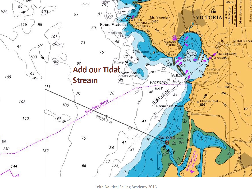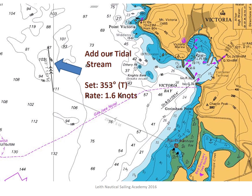From the end of our water track we now want to add our tidal stream. This is the set and rate of the tide for the period in which we have been sailing. In this example the set of the tide was 353 degrees true and the rate of the tide was 1.6 knots, so that in one hour we will have travelled 1.6 nautical miles.